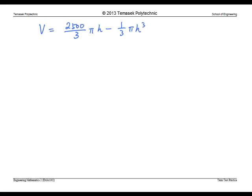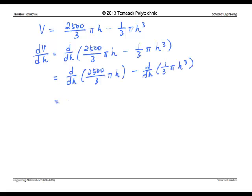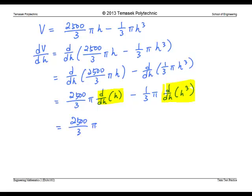First, we find the critical point by setting dv/dh to 0. Before that, we find dv/dh. Extracting constants we get. So, evaluating these derivatives, you obtain times 1 minus 1 over 3 pi times 3h squared, which is pi h squared.